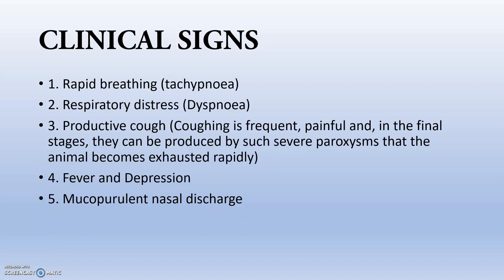Clinical signs include rapid breathing (tachypnea) and respiratory distress due to problems with the alveoli and bronchi. Productive cough is frequent and painful; in the final stage, animals may experience severe paroxysms, become exhausted rapidly, and produce sputum containing dead cells, bacteria, and fibrinous materials. Fever occurs due to bacterial toxins activating endogenous pyrogens, causing the body temperature to rise. Depression and mucopurulent nasal discharge are also commonly observed.